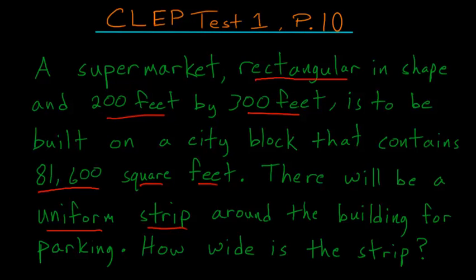So to solve a problem like this, we'll want to make a diagram. So we know that we have a city block that is 81,600 square feet. We know that we're going to put a supermarket on the inside of it, and the strip around the outside is going to be uniform.